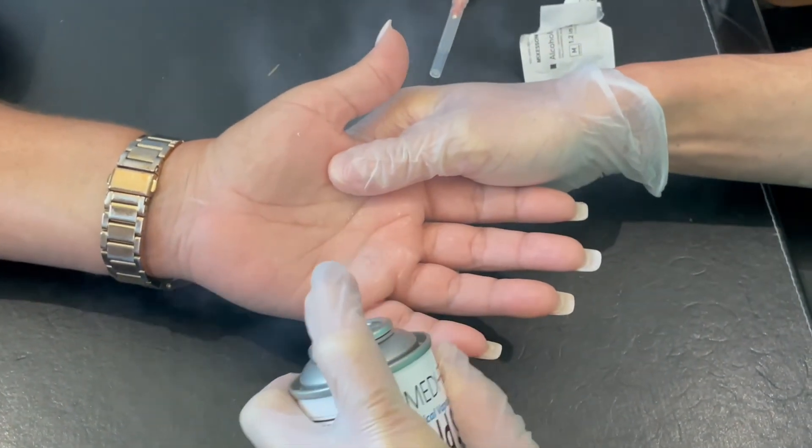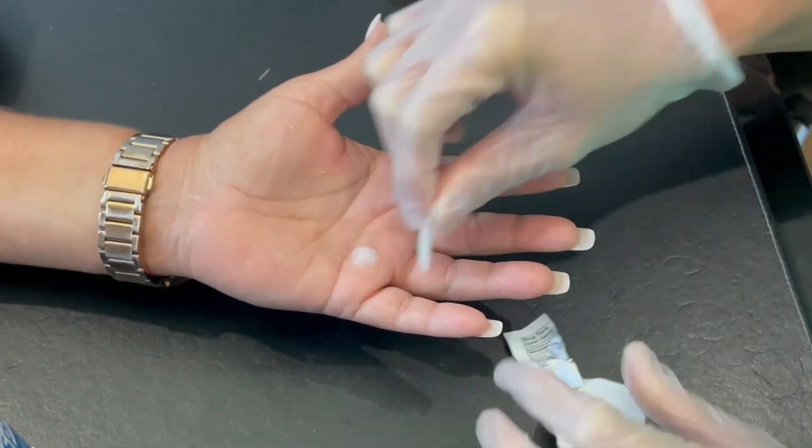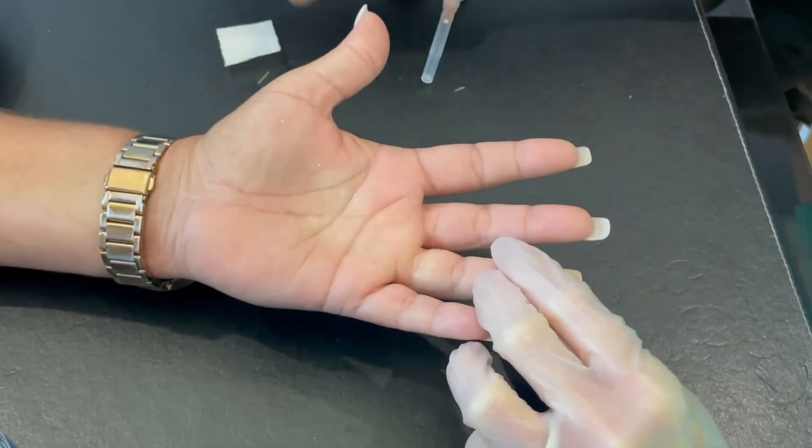So here's the injection. We use a butane cold spray to provide a little anesthesia and then an alcohol swab to clean the skin.